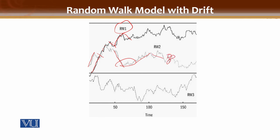We cannot say that the next step will be an increase. We cannot say that the next step will be a decrease. In random walk 3, the value moves from positive to negative, again positive, again positive, then negative, positive, negative, positive, negative. Across all three random walks, we are unable to predict the values.